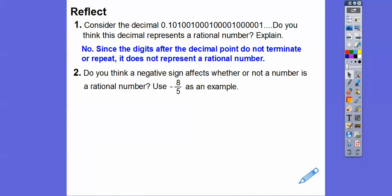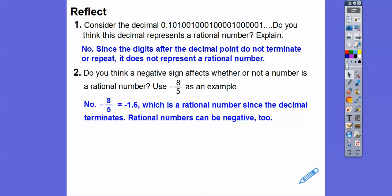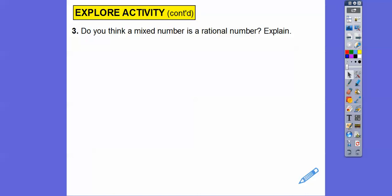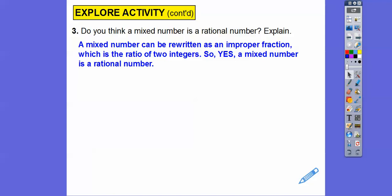Does a negative sign affect whether a number is rational? Using negative 8 fifths as an example: negative 8 is an integer, and so is 5 — that's an integer over an integer. Integers can be negative; they're just counting numbers and their negatives. So the negative sign doesn't change anything. Negative 8 fifths equals negative 1.6, which is a terminating decimal and is a rational number. And do you think a mixed number is rational? Yes — mixed numbers can be written as improper fractions, which are ratios of two integers, so mixed numbers are also rational numbers.